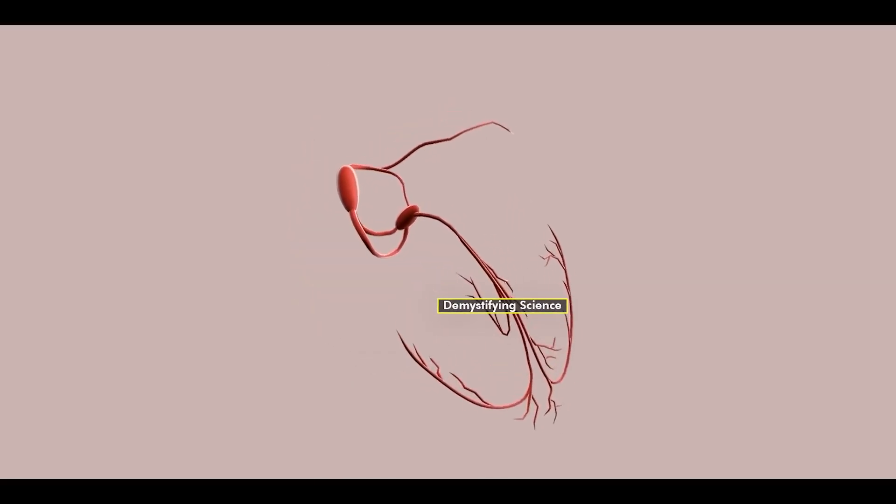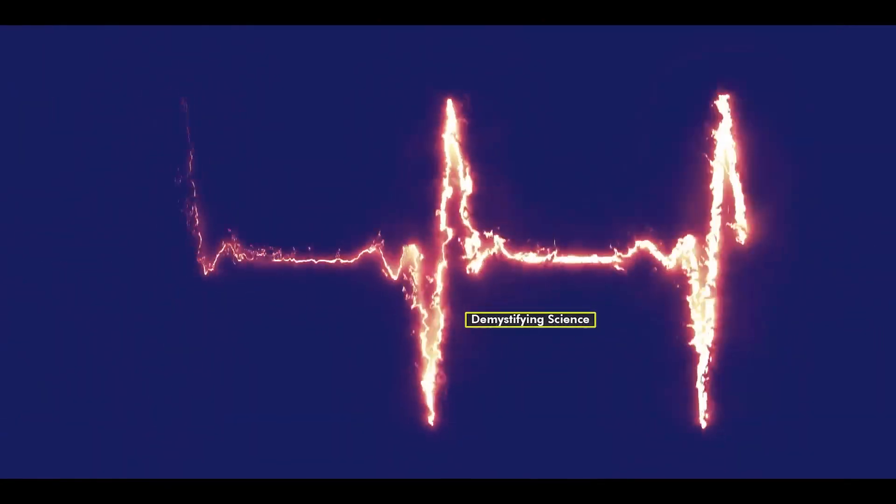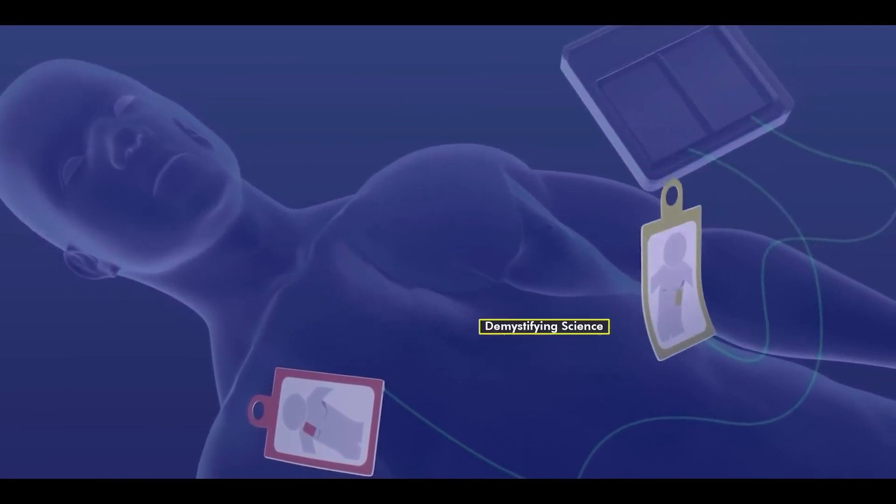If, due to some malfunction, the electric impulse does not reach the heart from the sinoatrial nodes, the heartbeat becomes abnormal, and defibrillation is used to correct it.